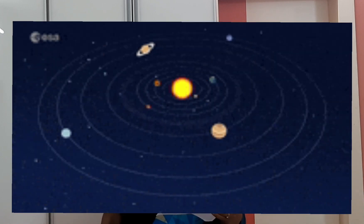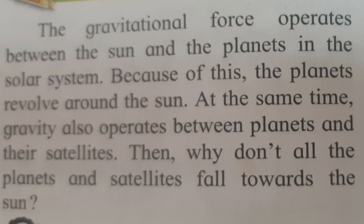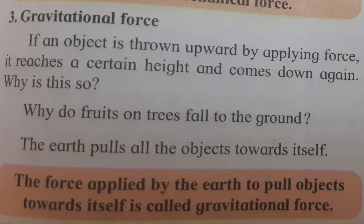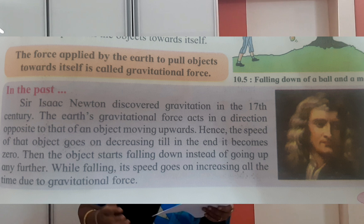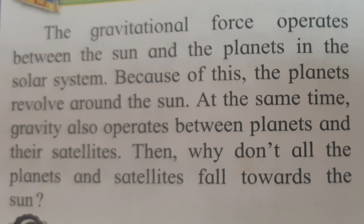Second: all the planets in the solar system revolve around the sun. The gravitational force operates between the sun and the planets. We have studied that gravitational force is very important, and because of that everything is in its place. If we jump, we come back down because of gravitational force. This gravitational force also acts on the planets, and because of that the planets revolve around the sun and are kept in their proper orbit.